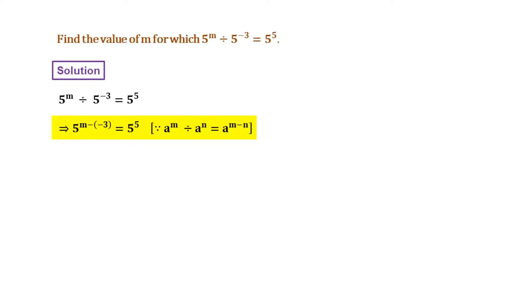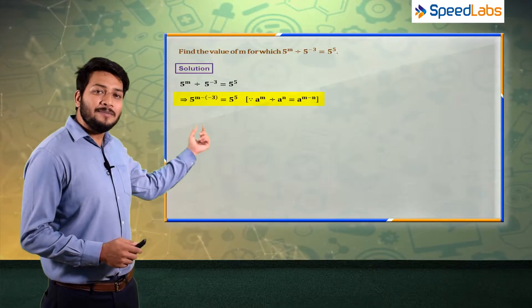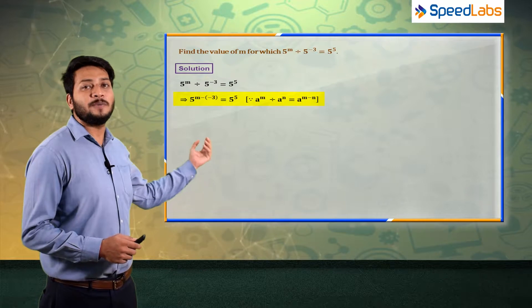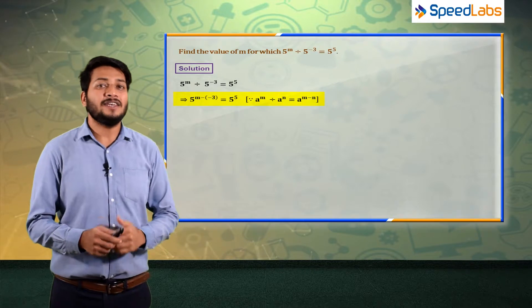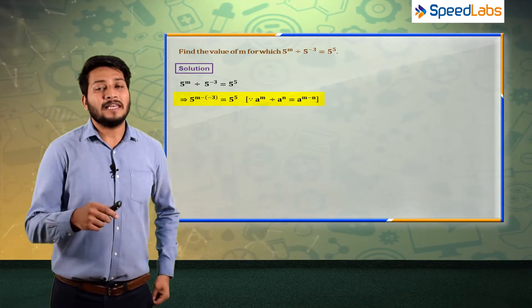What is the property? If the base is the same, so a raised to the power m divided by a raised to the power n, so both the base a is common, so I can say a raised to the power m minus n.